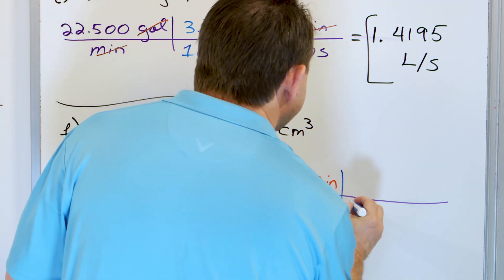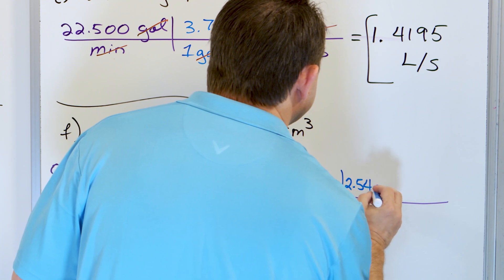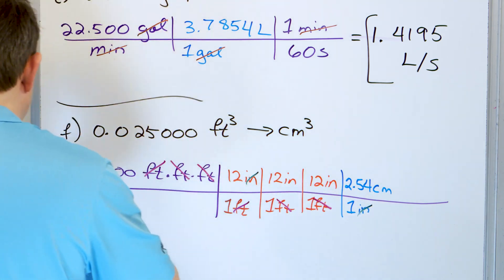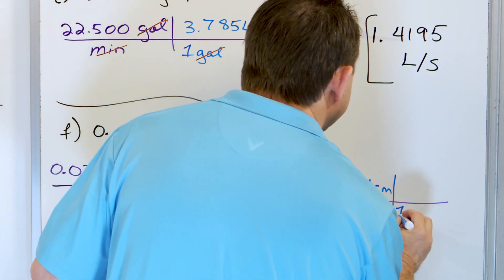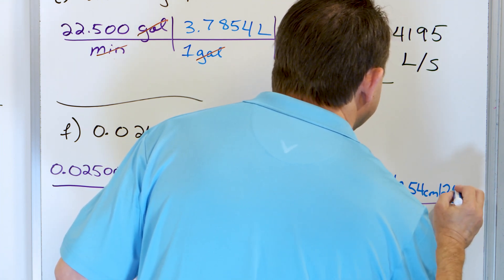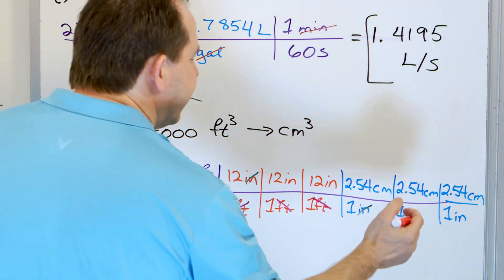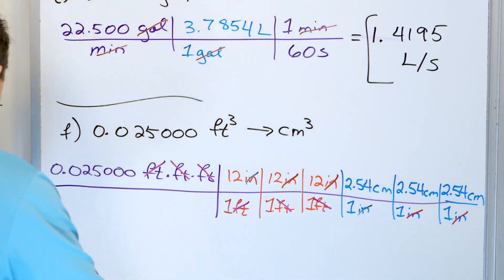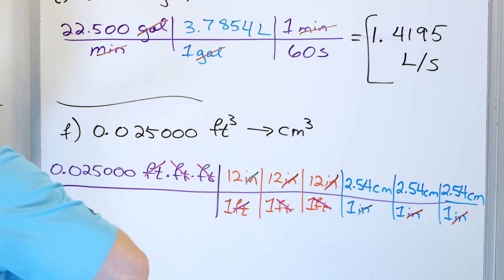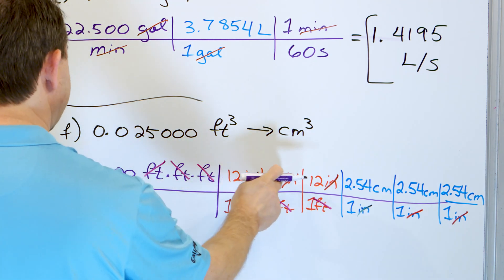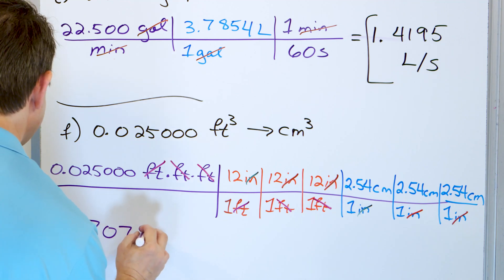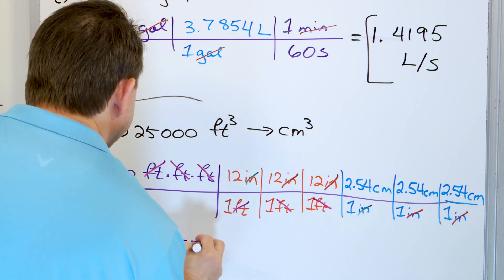But I want cubic centimeters. I know that in one inch there are 2.54 centimeters. That cancels only one of the inches, so I do it again: one inch, 2.54 centimeters — and again: one inch, 2.54 centimeters. Now everything is gone except centimeters times centimeters times centimeters, which is cubic centimeters. Take 0.025000 times 12 times 12 times 12 times 2.54 times 2.54 times 2.54 and you get 707.92 cubic centimeters.